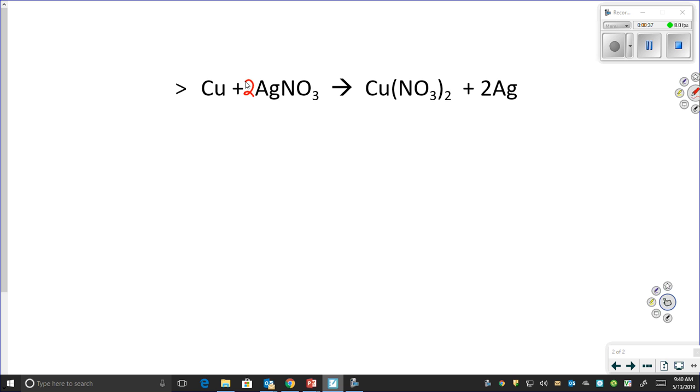First thing that we're going to do is we're going to look for anything that is free state. Free state means that they are unbonded. Anything that is in free state by default doesn't have an oxidation number because it isn't bonded to anything. So I'm going to go in and assign those oxidation numbers. So our copper has an oxidation number of zero, and our silver also has an oxidation number of zero. That's pretty straightforward.